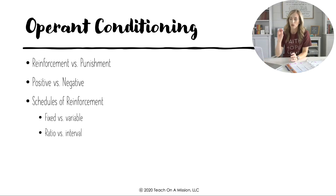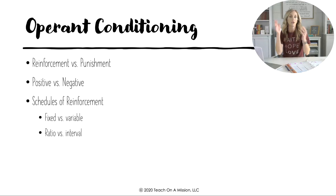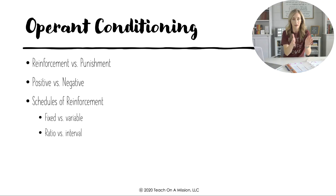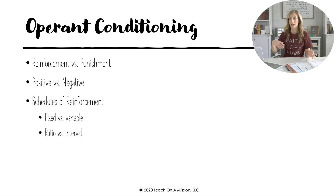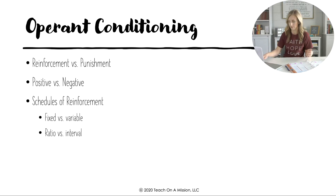The schedules of reinforcement: fixed means it's predictable, variable means you don't know when reinforcement is coming. Ratio is based on the number of times responding; interval is based on the amount of time spent responding. Ratio would be something like betting; interval would be something like fishing — it's not the number of times you fish, it's the amount of time you spend fishing.